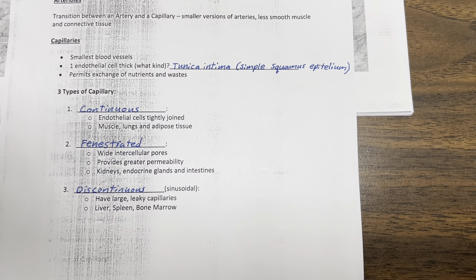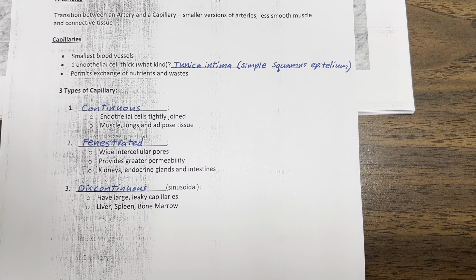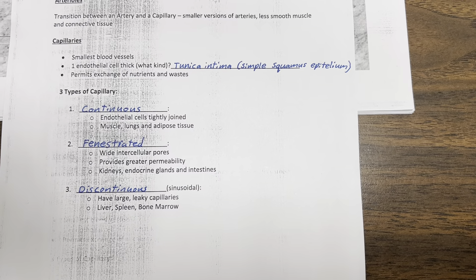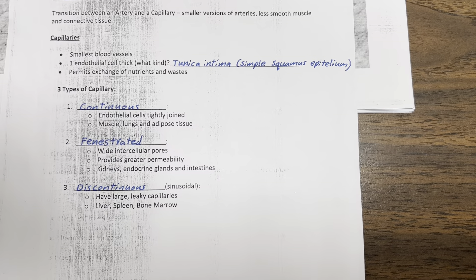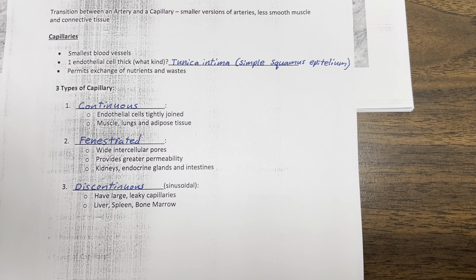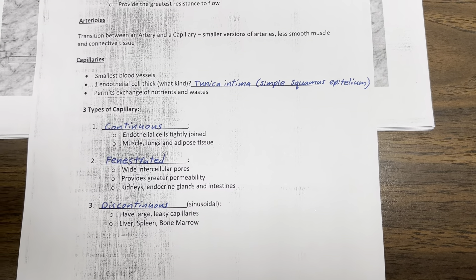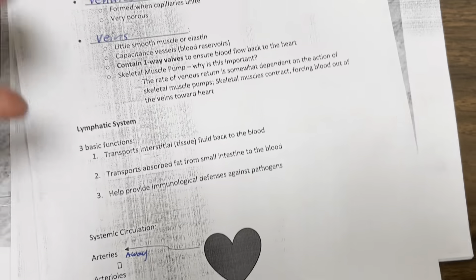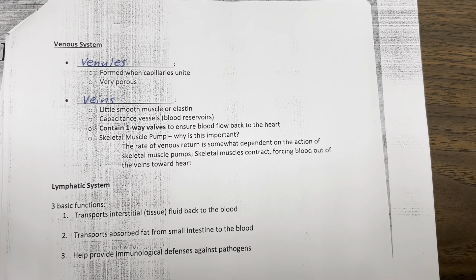Discontinuous capillaries have large leaky capillaries, and they are found in the liver, spleen, and bone marrow.